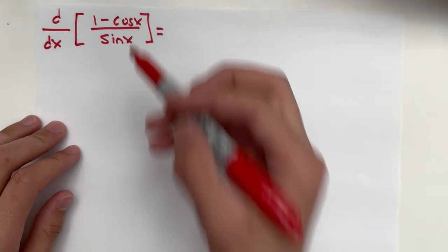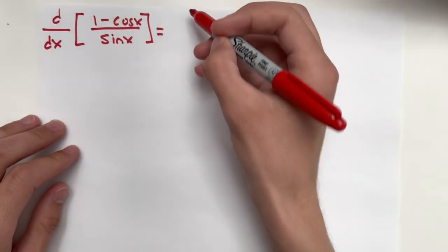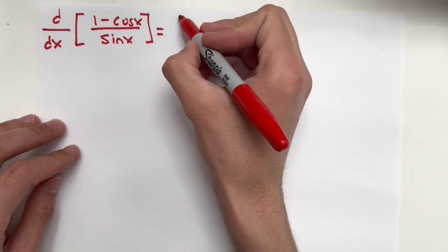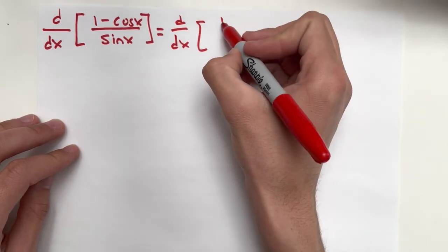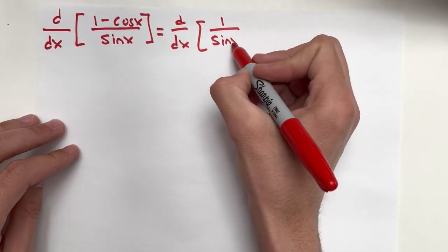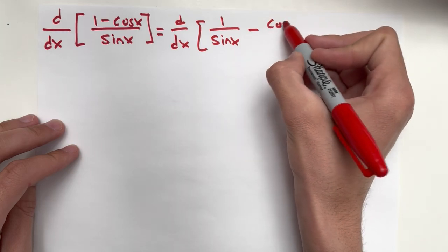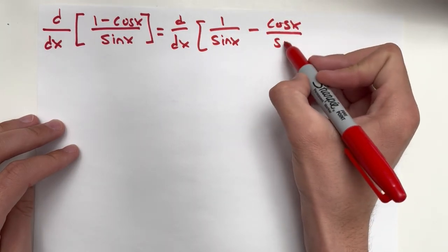We can simply split this up. We can split the numerator up. So we can actually rewrite this as d/dx 1 over sine x minus cosine x over sine x.